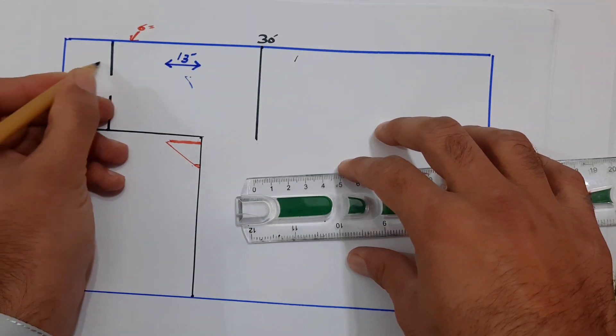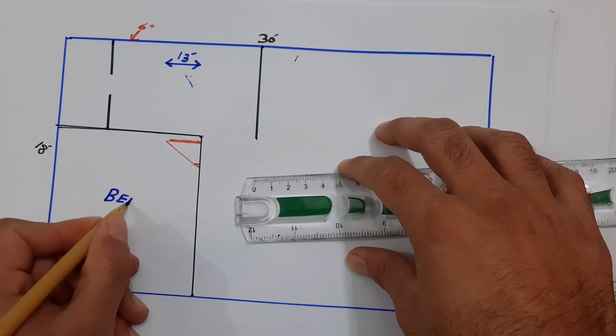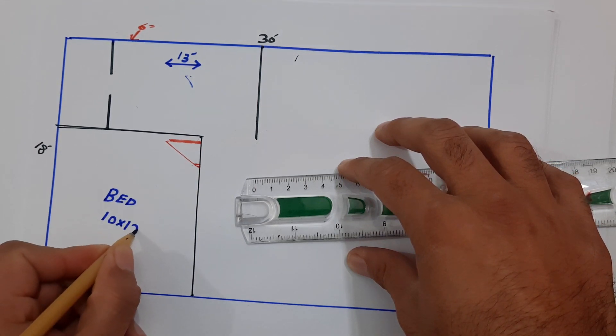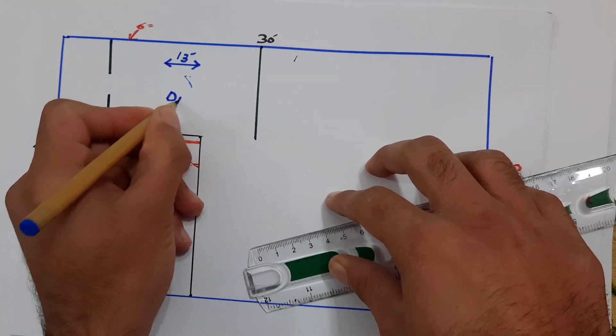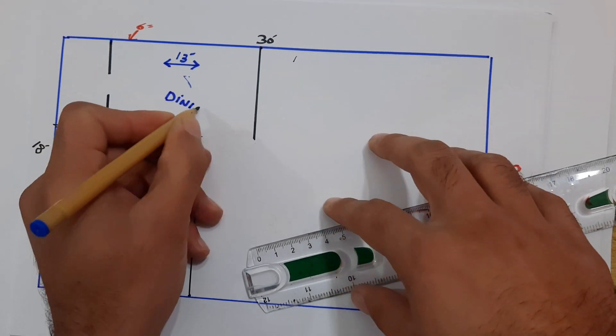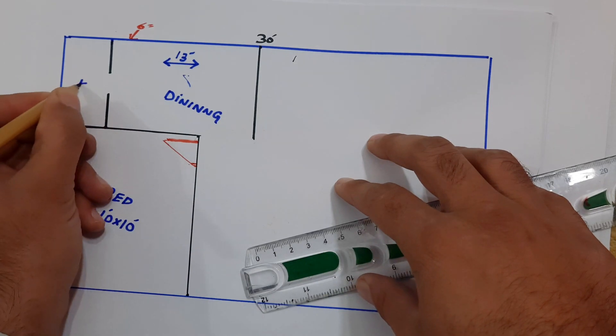Okay, this is open kitchen, guys, right. This is bed toilet which is 10 by 10 feet. Okay, this is dining kitchen.